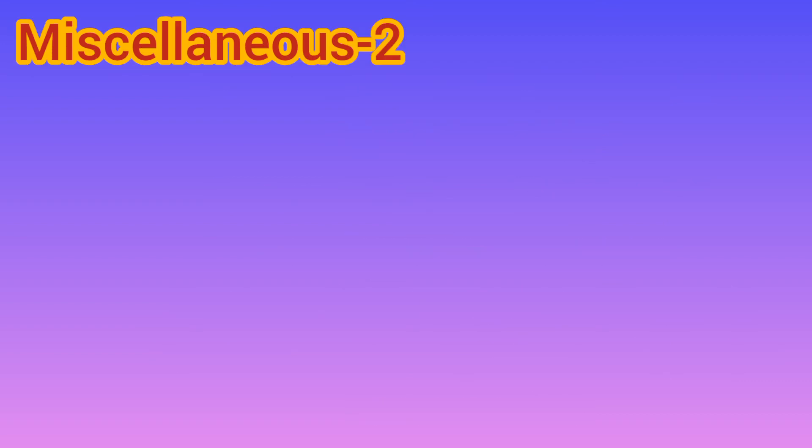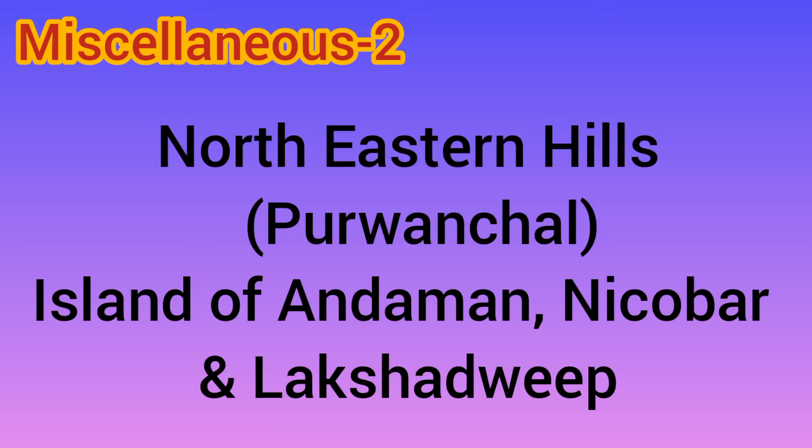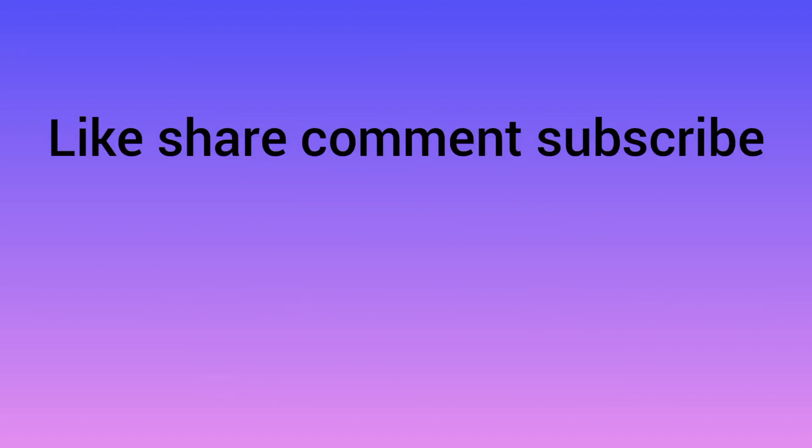So we remember 9 zones in the Plateau group, and similarly we can remember 19 names in total. Now 2 are missing — what are they? North Eastern Hills (Purvanchal), Islands of Andaman & Nicobar, and Lakshadweep. I hope you remember all 21 names in just under 2 minutes!